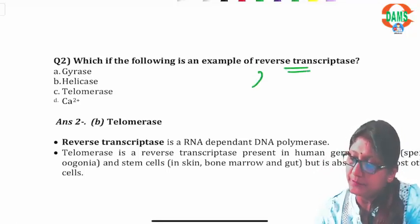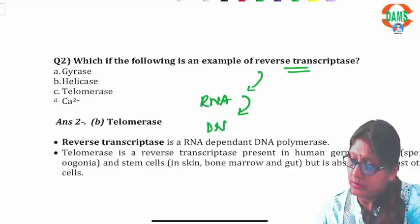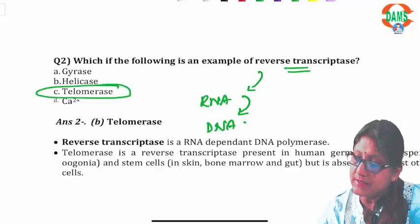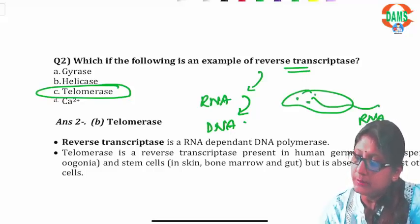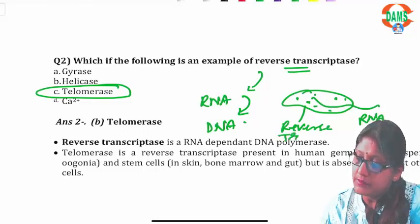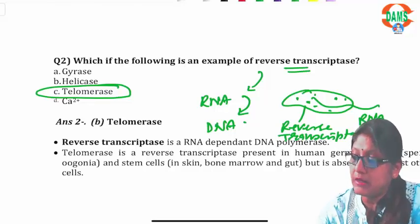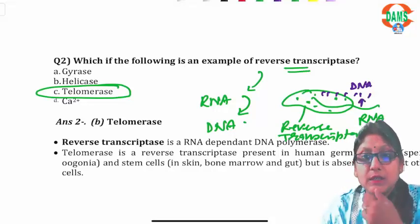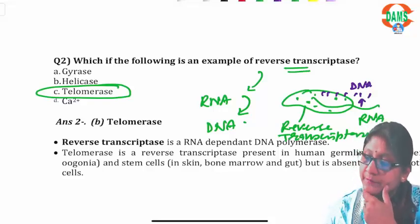The next question asks for an example of reverse transcriptase enzyme activity. Reverse transcriptase means RNA to DNA formation, and this activity is seen in the telomerase enzyme. Telomerase has an RNA thread within it, and the protein body of telomerase has reverse transcriptase activity, which reads the RNA sequence and makes complementary DNA — the telomere produced by this enzyme.